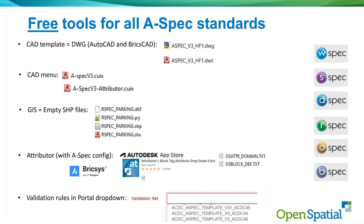The tools we offer with ACDC — when you say you've got a toolkit and want to work on AutoCAD or BricsCAD, we give you an AutoCAD template as a DWT that works with AutoCAD and BricsCAD. There's also a CAD menu. Typically ASPEC v3 works on something like AutoCAD LT and the Attributor from the Autodesk App Store or the BricsCAD App Store.